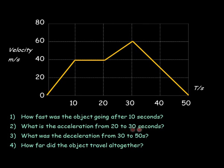What is the acceleration from 20 to 30? Well, the change in speed during that time is 20 metres per second in a time of 10 seconds. So it would be 2 metres per second squared.